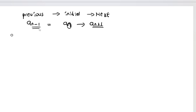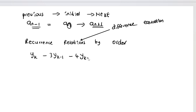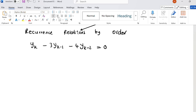In this lesson we are going to be classifying recurrence relations by their order. A recurrence relation is a special type of difference equation. An example of a difference equation might look like: y_k minus 3·y_(k-1) minus 4·y_(k-2) equals 0. This is a recurrence relation because we are able to relate consecutive terms.